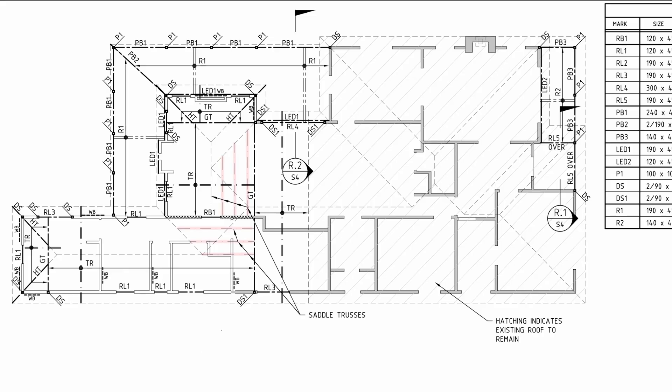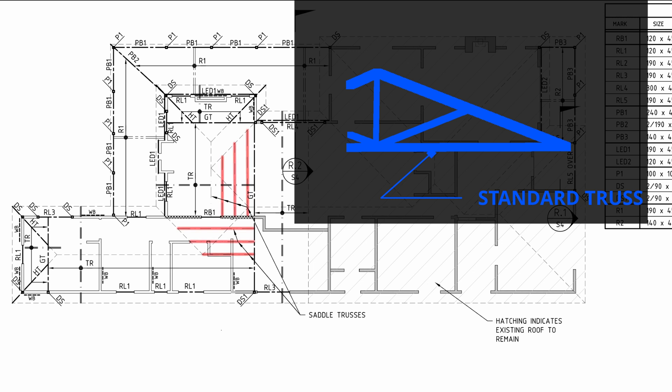Another thing you can see on this plan is that we're trying to maintain the same pitch of each of these rafters. We've also got saddle trusses on this documentation. A saddle truss sits on top of a general roof truss to allow for a roof pitch change. Typically you'll keep the same rafter falling through, then put a saddle truss on top to allow for that minor change in pitch. This allows for more efficiency, as efficiency really lies in replication — the more replication you can have in a drawing, typically the cheaper it will be.